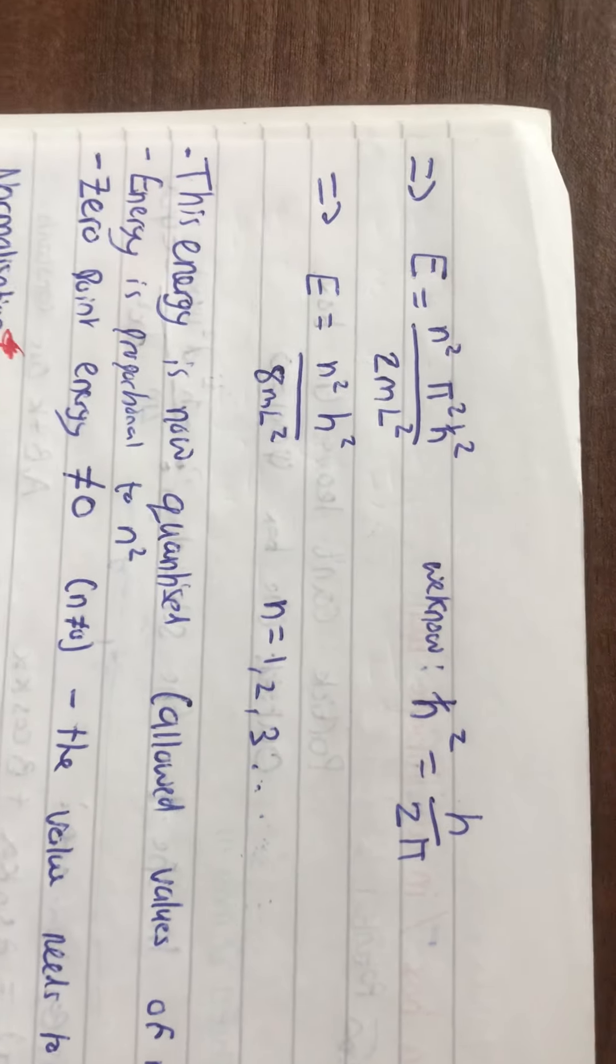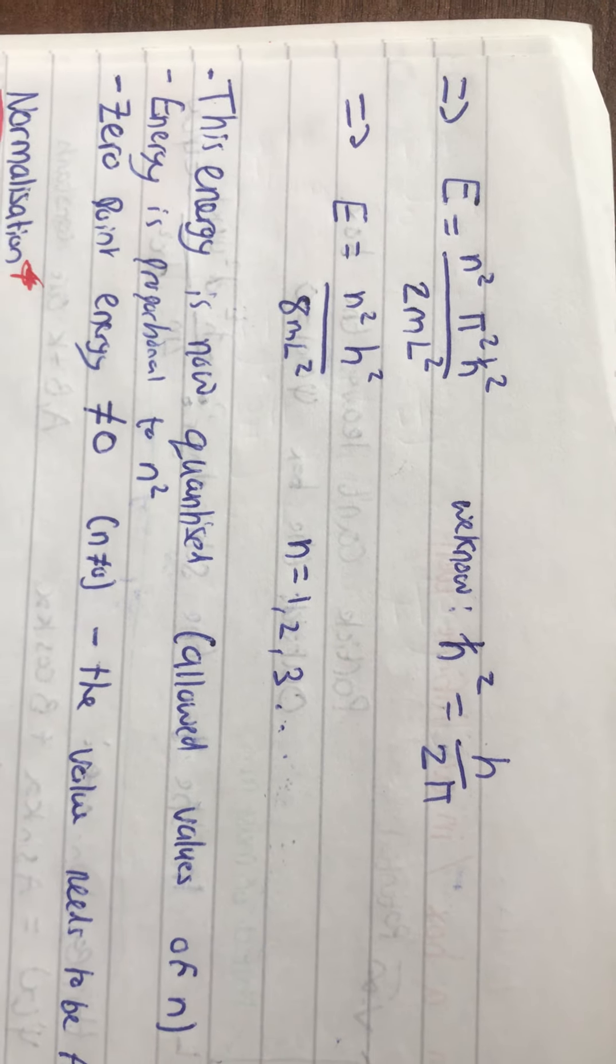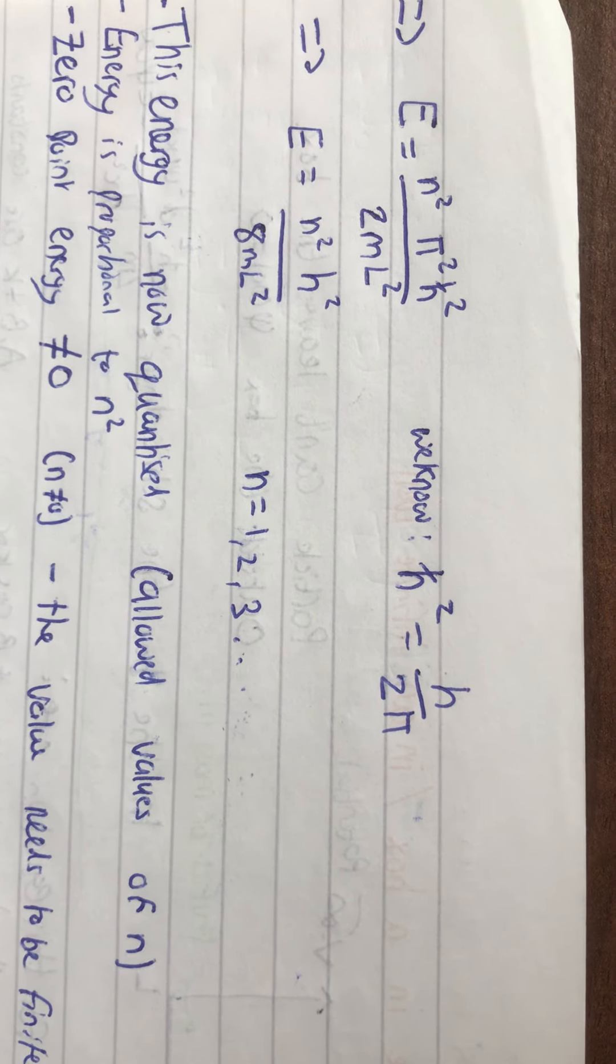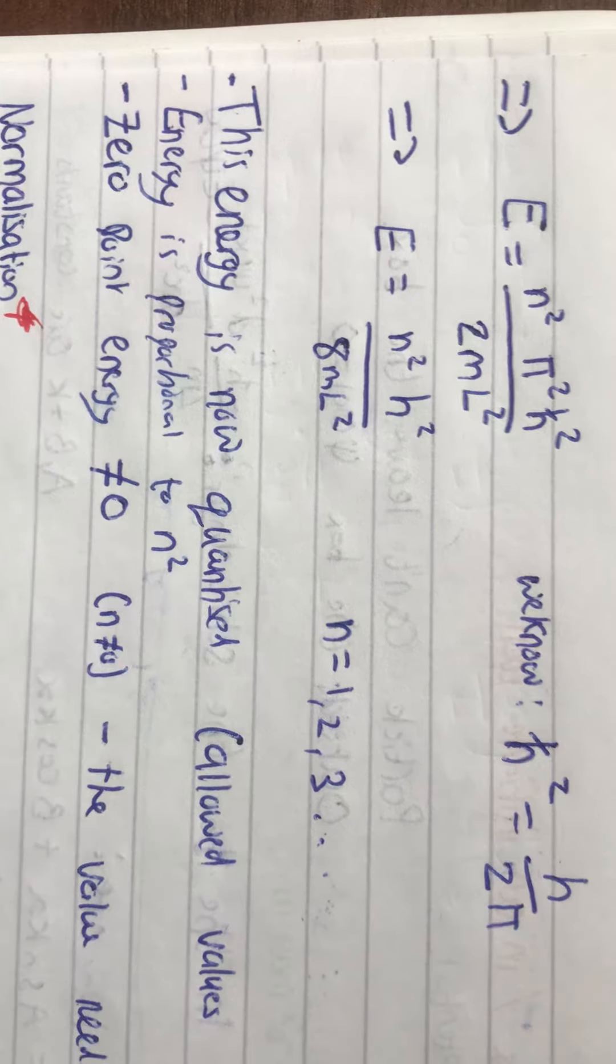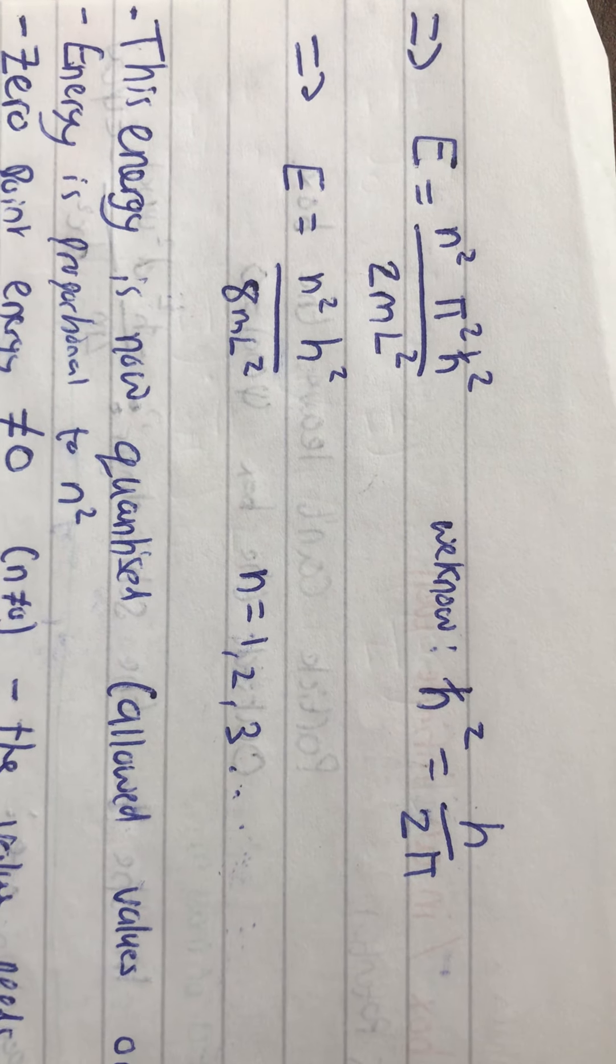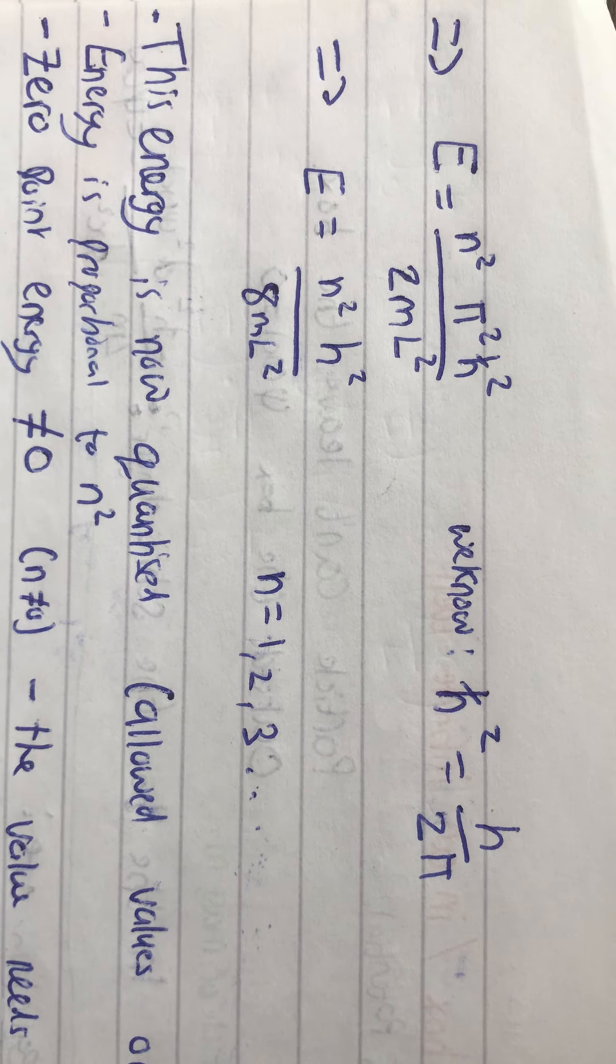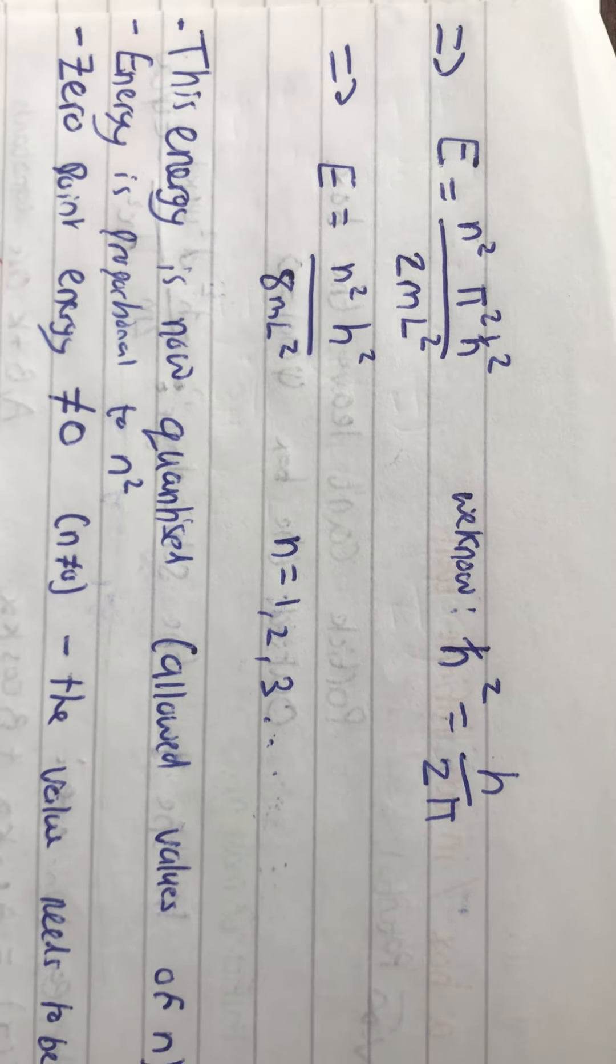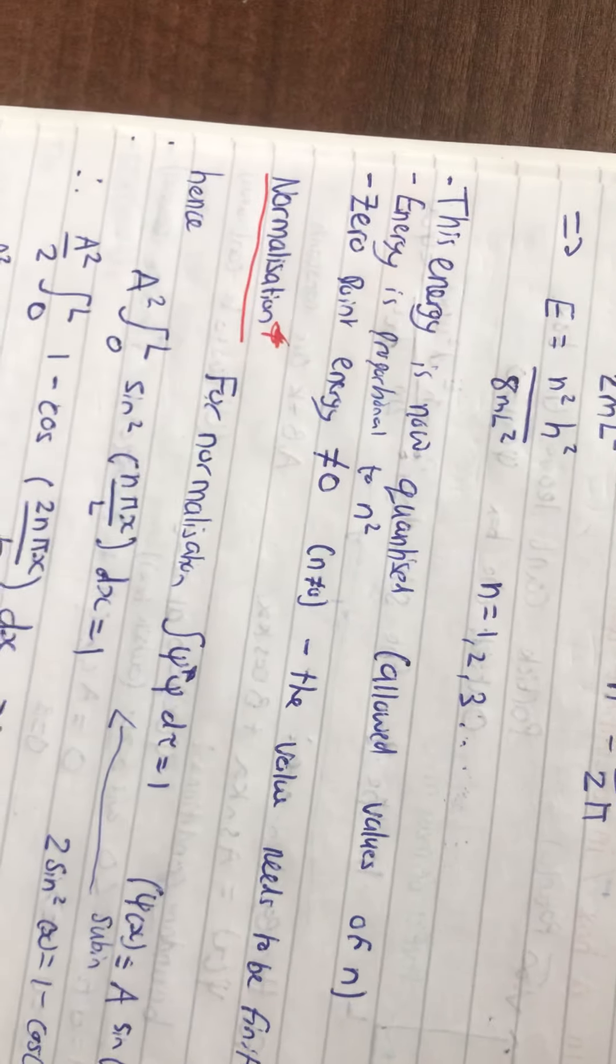Okay. So, we've got E equals to that. And, we know that the Planck's reduced constant squared is equal to normal Planck's constant over 2π. So, we can sub that in and get E is equal to n squared times h squared over 8mL squared,